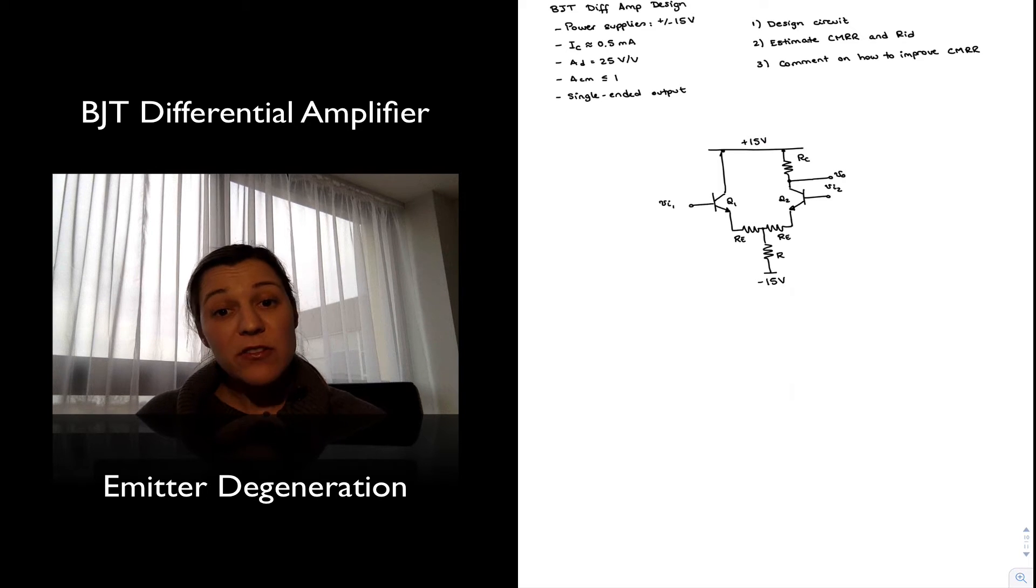Alright, so step number one, I am going to, since I am going to be taking my output out of this node over here, this is going to be my output voltage right there. And so I am going to want to center it for maximum output voltage swing. Now I need to distribute the amount of voltage I have available. I have 30V available in between my supplies. I am going to have to distribute it between all my circuit components.